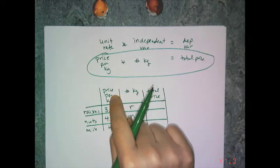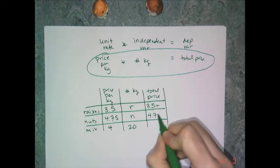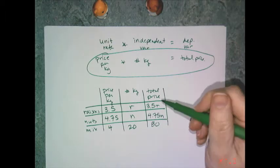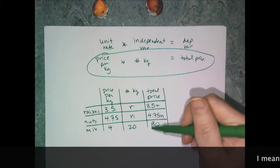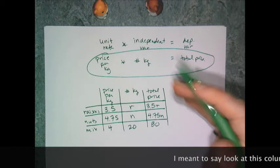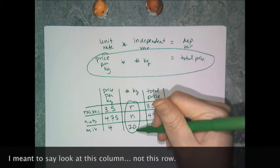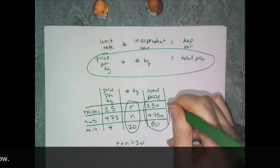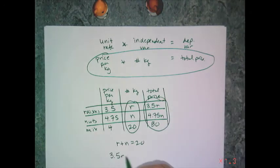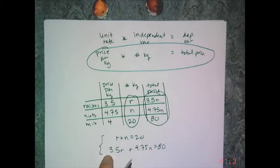This column times this column equals this column: 3.5R, 4.75N, and 80. These represent the total price of the raisins, total price of the nuts, and total price of the entire mixture. My two equations come from this table: looking at the row, R plus N equals 20; and looking at the value column, 3.5R plus 4.75N equals 80. These two equations constitute my system.